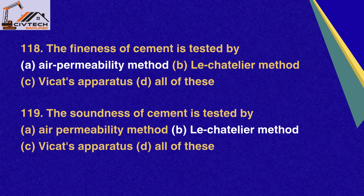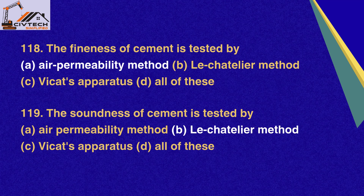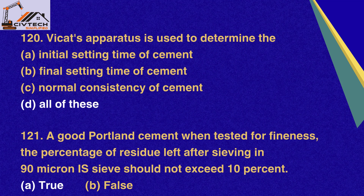Question 118. The fineness of cement is tested by: A. Air permeability method, B. Le Chatelier method, C. Vicat's apparatus, D. All of these. Correct option A: Air permeability method. Question 119. The soundness of cement is tested by: A. Air permeability method, B. Le Chatelier method, C. Vicat's apparatus, D. All of these. Correct option B: Le Chatelier method. Question 120. Vicat's apparatus is used to determine: A. Initial setting time, B. Final setting time, C. Normal consistency, D. All of these. Correct option D: All of these.